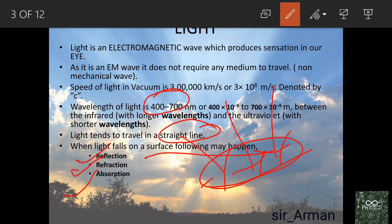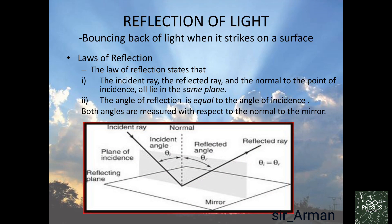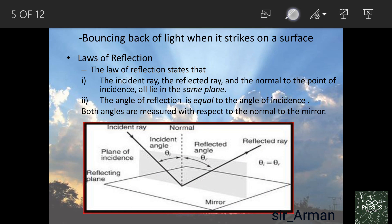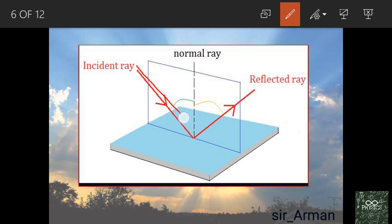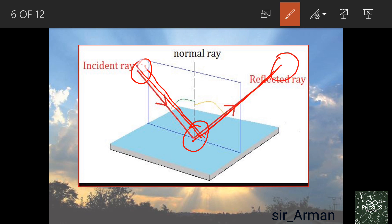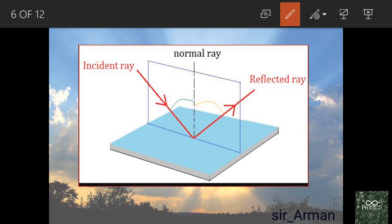Now let us study reflection of light. Reflection is simply the bouncing back of light when it strikes a surface. When light is incident on a surface, it reflects back — like a ball thrown at a surface that bounces back. So the bouncing back of light from a surface is called reflection of light.